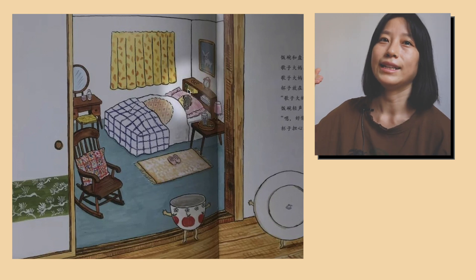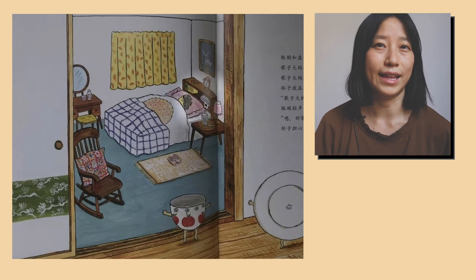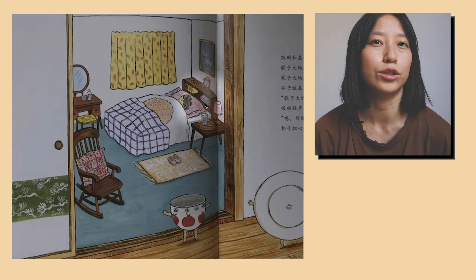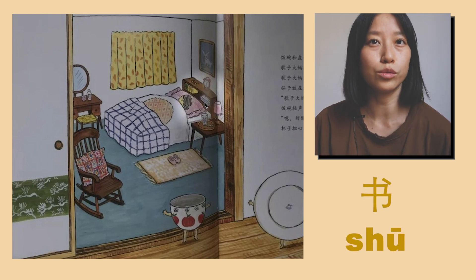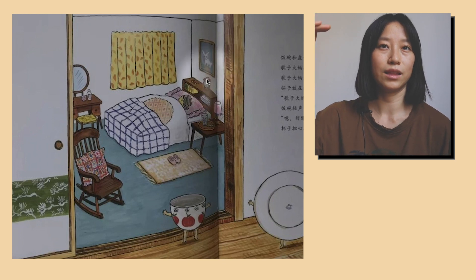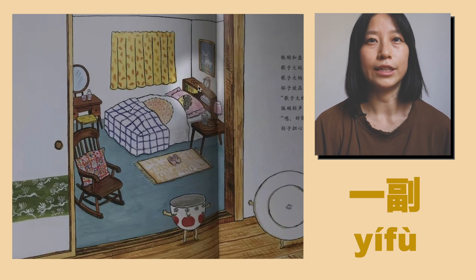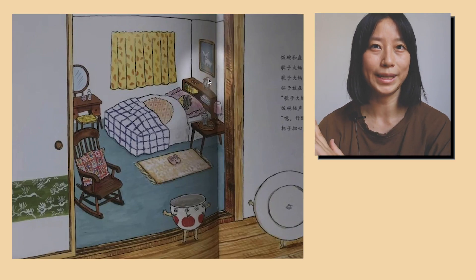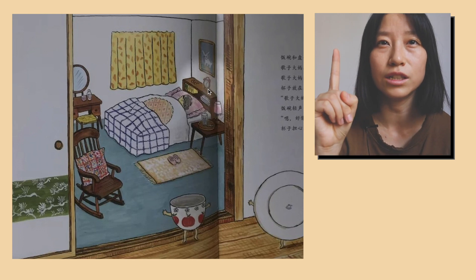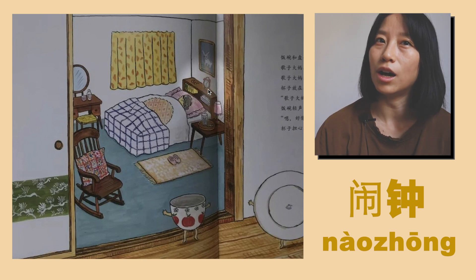床頭柜裡面有很多書。床頭柜的上面有一副眼鏡。眼鏡的旁邊有一個鬧鐘。鬧鐘。 (Inside the nightstand there are many books. On top of the nightstand there is a pair of glasses. Beside the glasses there is an alarm clock. Alarm clock.)